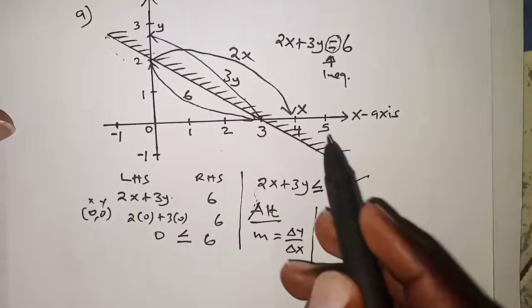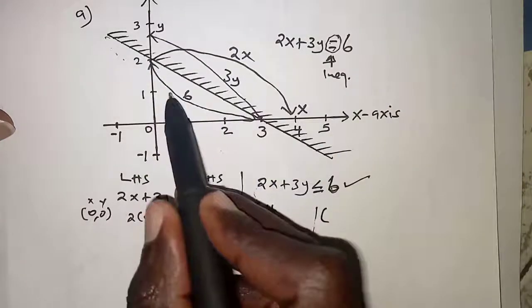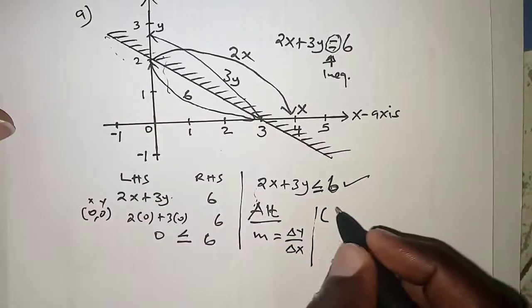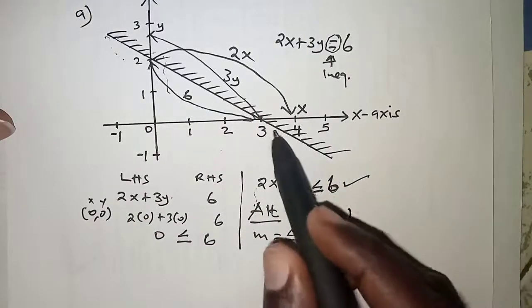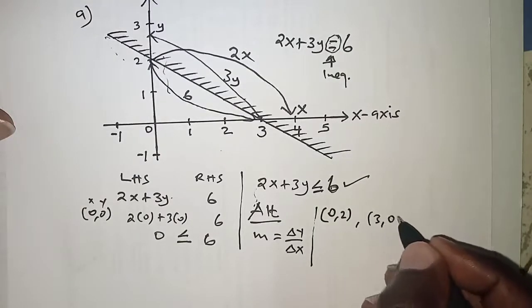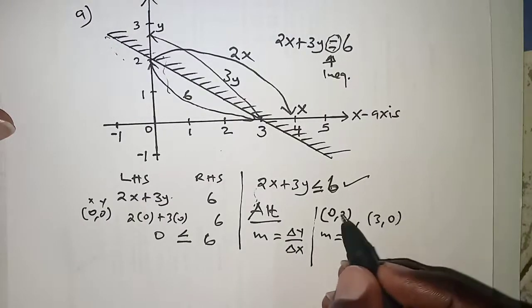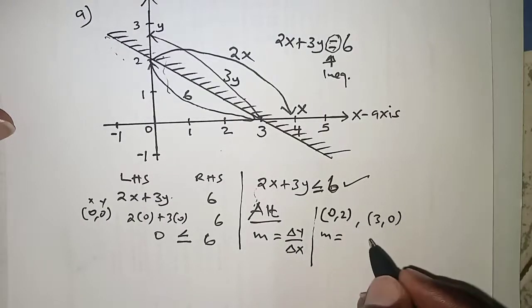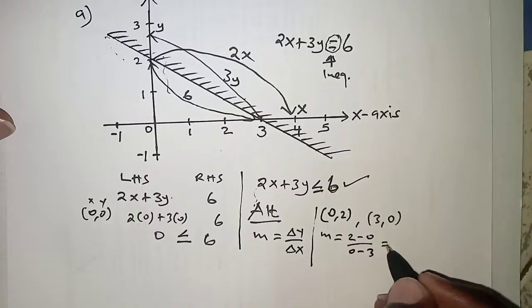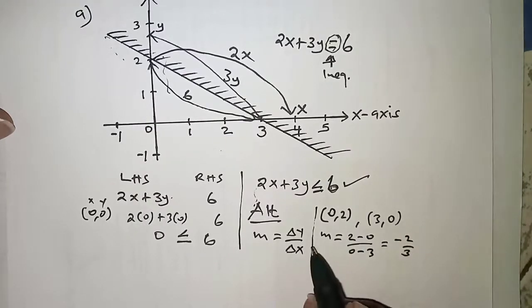At the y-intercept we have point (0,2) and the x-intercept is (3,0). So the gradient becomes change in y over change in x. That is (2 - 0) all over (0 - 3), and that should give us negative 2/3.